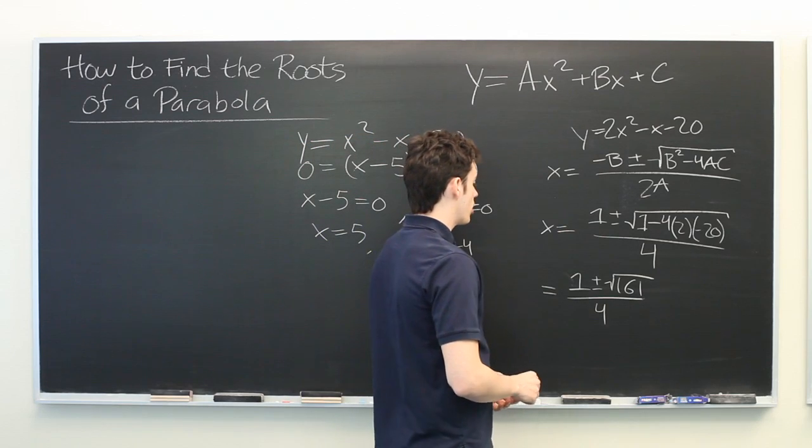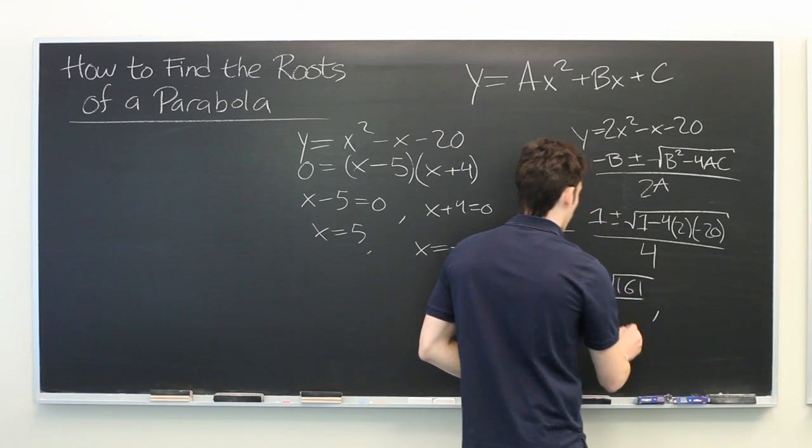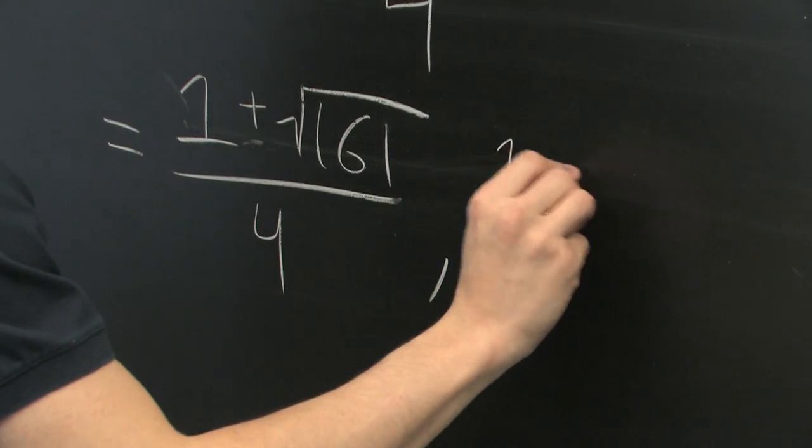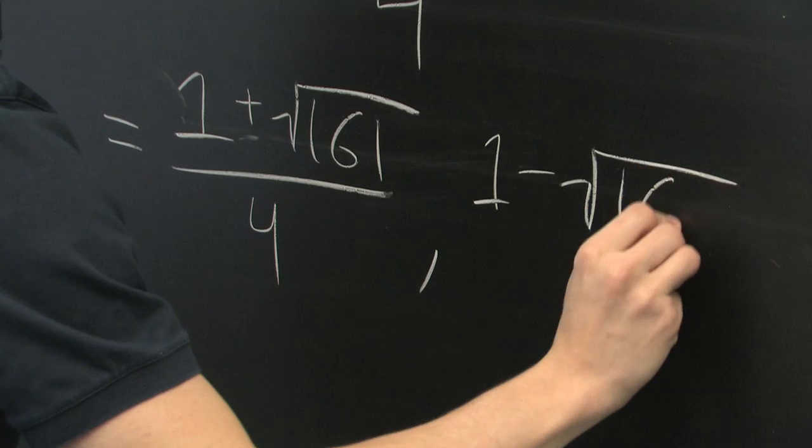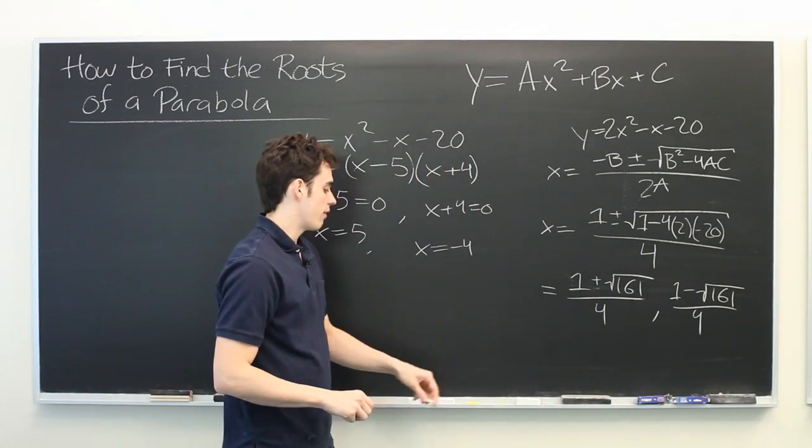And if you want, you can rewrite this as two different answers: 1 plus square root 161 over 4, and 1 minus the square root of 161 over 4. Either way is a perfectly valid representation.